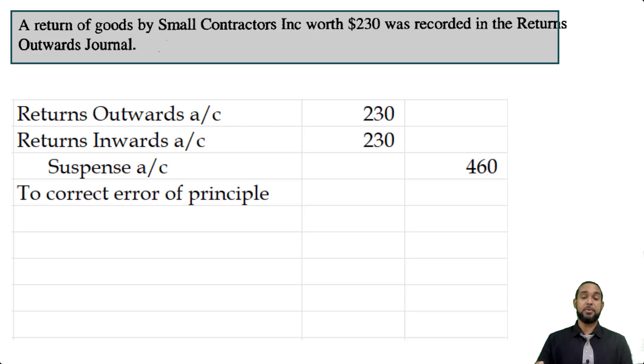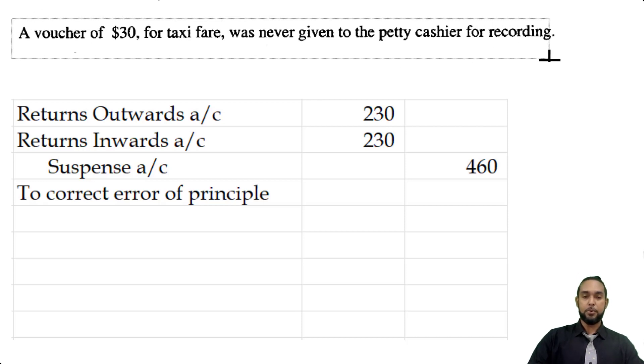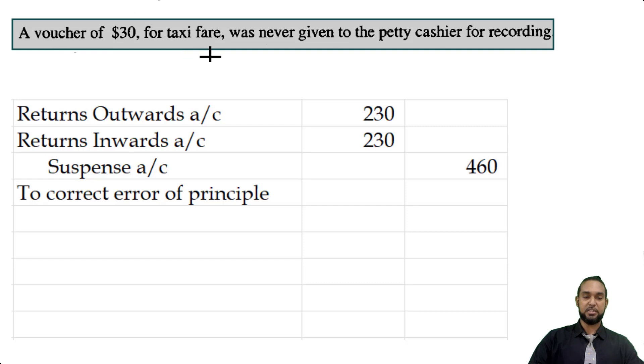So now the credit here will go to the suspense account. And this would be to correct an error of principle. So this is also an error of principle. Okay. So next item, item three, a voucher of $30 for taxi fare was never given to the petty cashier for recording. Okay. This is an error of omission. If you don't give the voucher, the transaction can't be recorded, but it should have been. So it was omitted.